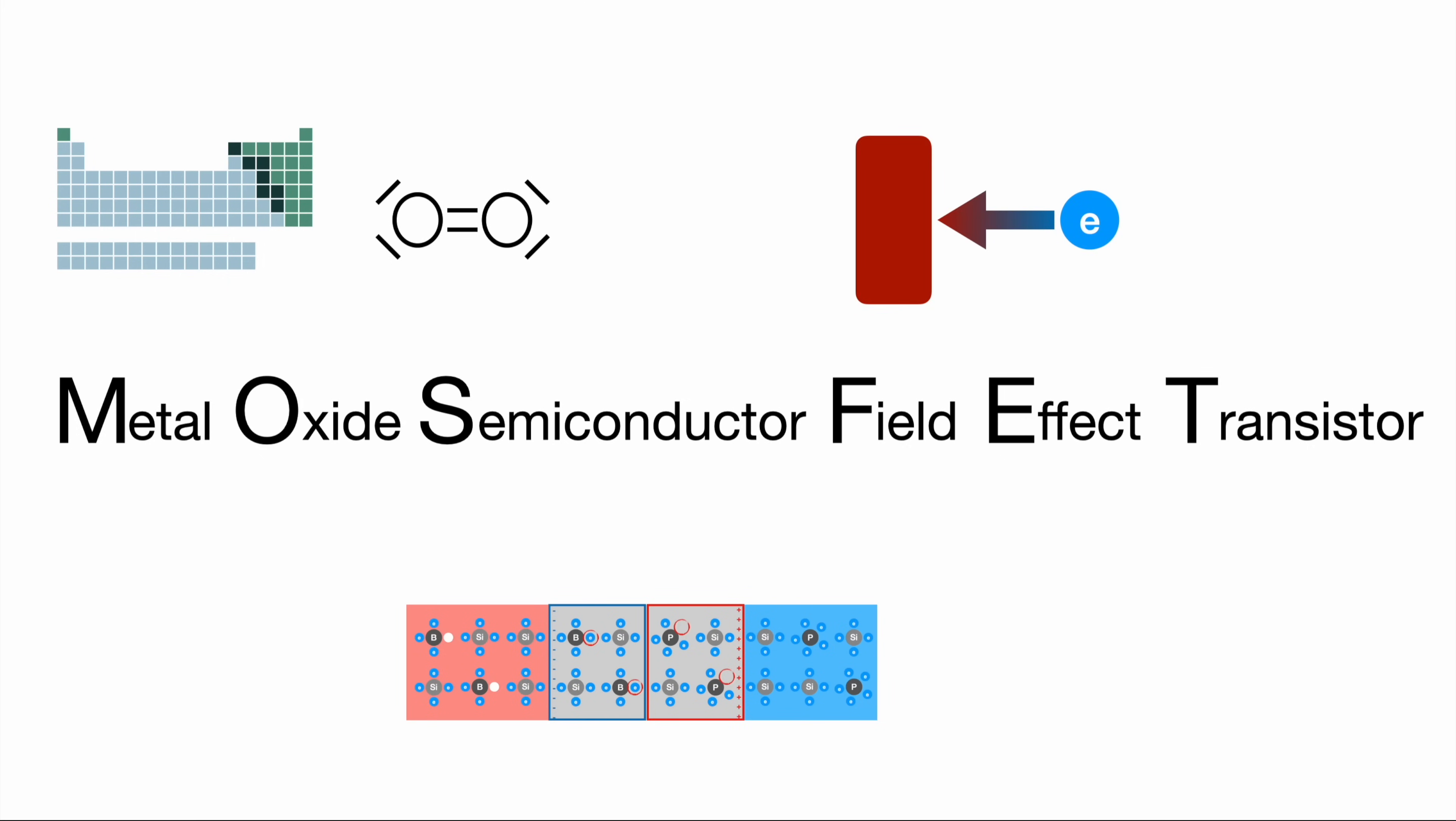The field effect refers to the effect that positive and negative charges tend to move towards each other. The transistor is an electrical switch. We are talking about a type of transistor utilizing the field effect and made out of metal oxide semiconductor.